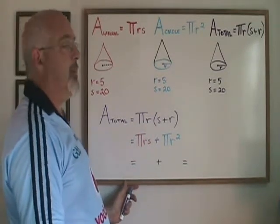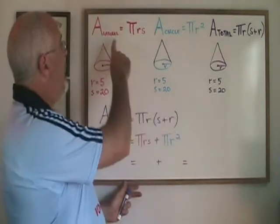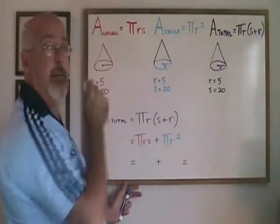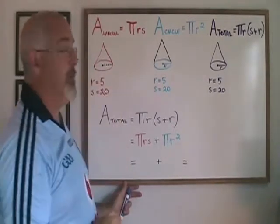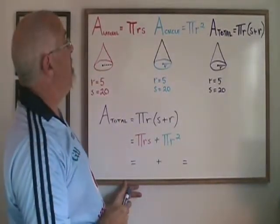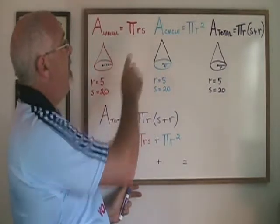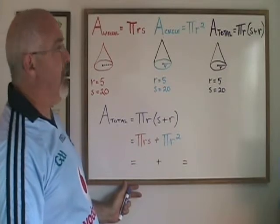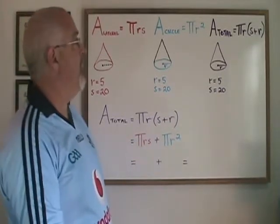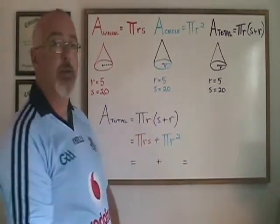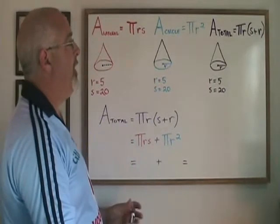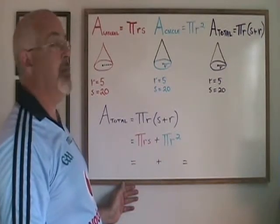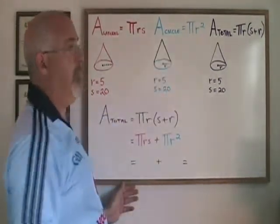The students are also required to know how to calculate the lateral area of a cone, which is the area just of the slanted outside part and does not include the area of the circle at the bottom. And that's an easy formula to remember: pi r s, with r being the radius and s being the slant height. They also are required to know the area of a circle formula, which is pi r squared. And the truth about the total area of a cone formula is that it is just a combination of these two other simpler formulas.